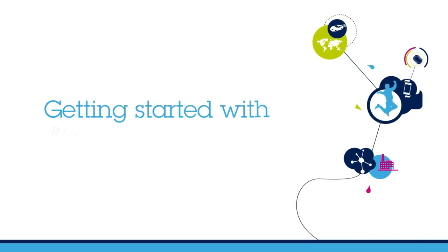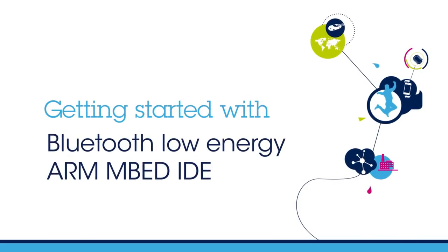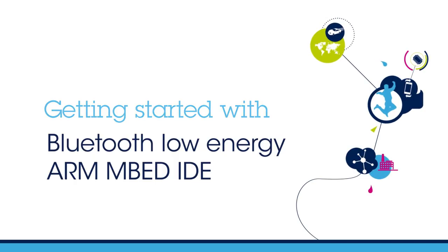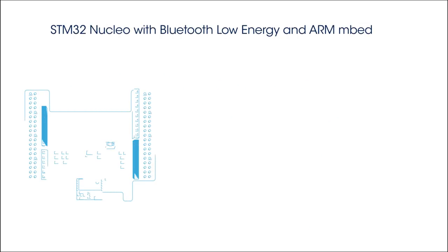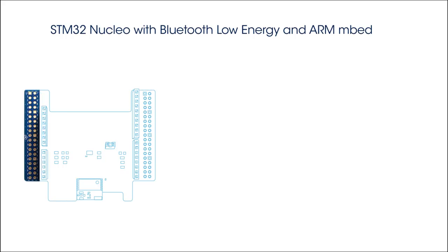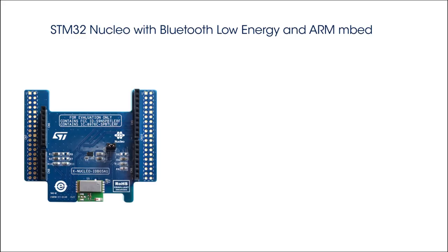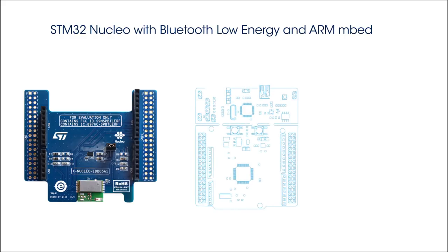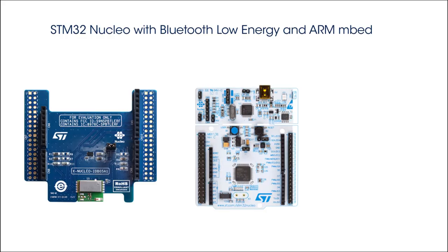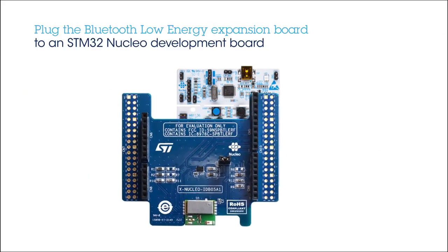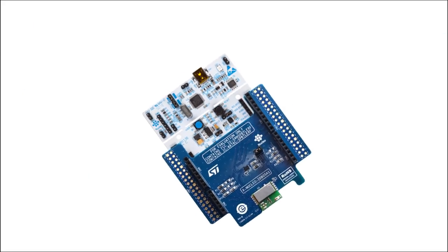Welcome to this explainer video on the SDM32 Nucleo Bluetooth Low Energy Expansion Board using the ARM Embed Environment. This expansion board enables you to connect to Bluetooth enabled devices and open a communication channel supporting many standard profiles. During this video, we will show you how to connect to a smartphone and monitor a heart rate via a mobile application. We are going to explain how to get your application running in the ARM Embed Environment. The first half of the video will focus on the software setup and the second half will detail the hardware functionality available.